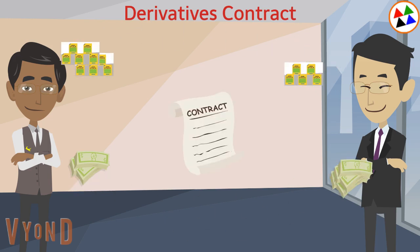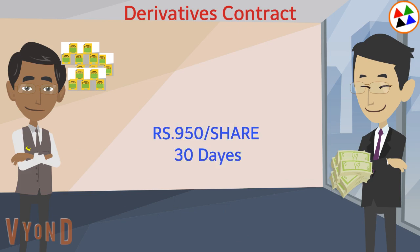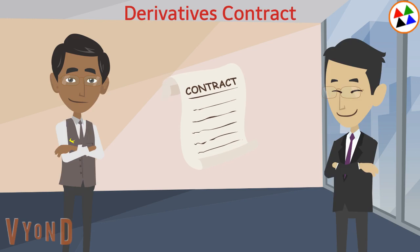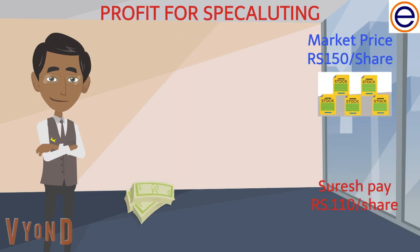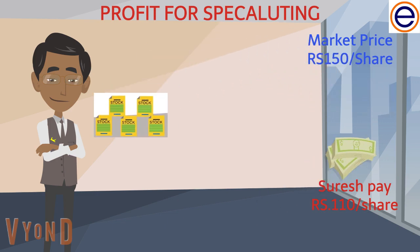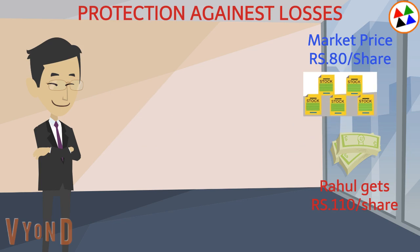Rahul will sell Suresh shares in Reliance at an extra cost — like rupees 950 — for 30 days, regardless of the price of those shares in the market. This deal between Rahul and Suresh is known as a derivative, in which Suresh can earn profits by predicting future prices and Rahul can reduce his losses.